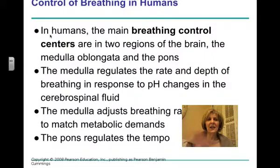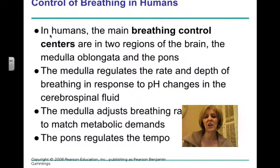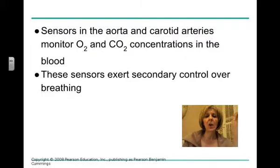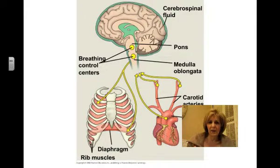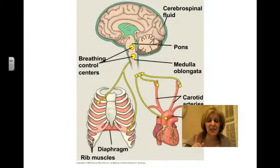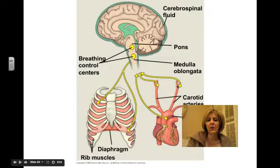The pons regulates the tempo of breathing, and the medulla is going to regulate the rate and the depth of our breathing, and it's going to respond especially to pH changes. There are sensors in the carotid and the aortic arteries that are going to monitor carbon dioxide and oxygen levels in the blood. You may think that it is the lower oxygen level that would trigger breathing to occur faster, but actually it is a higher CO2 level. The carotid bodies in the carotid arteries and also one in the aortic loop are the key sensors.